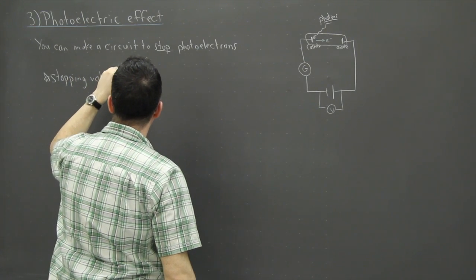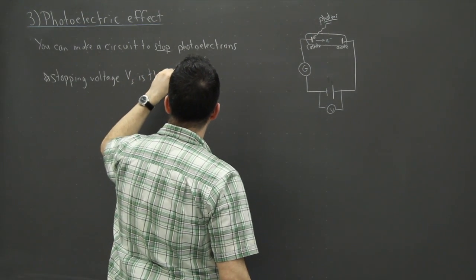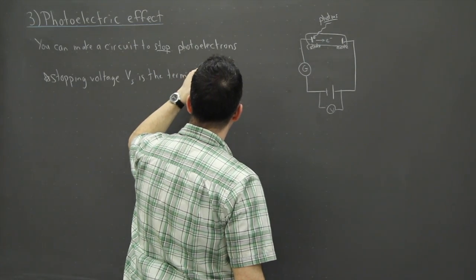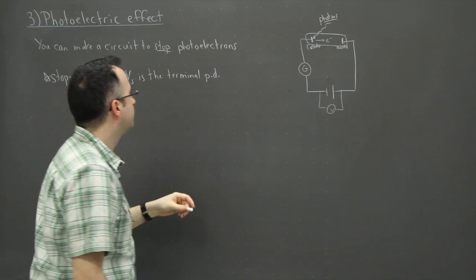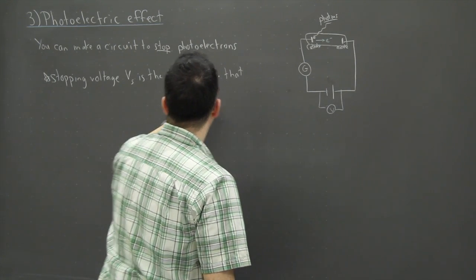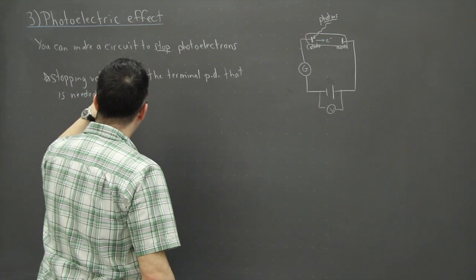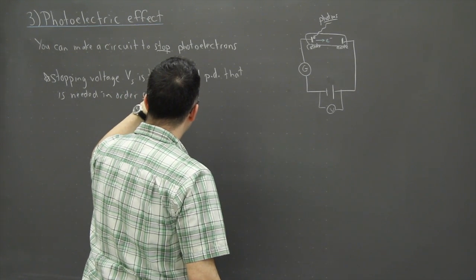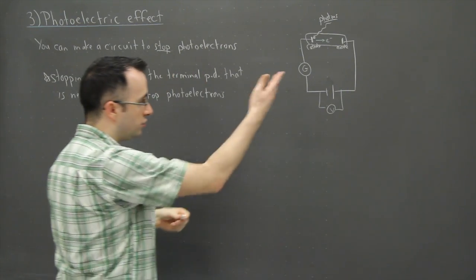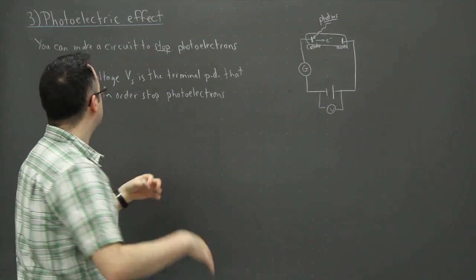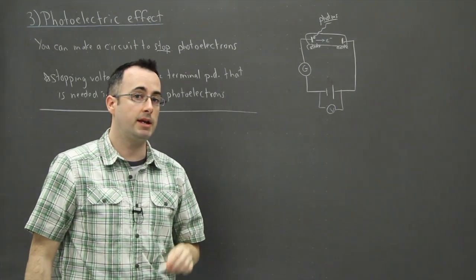Okay, so this right here we're going to call this the stopping voltage and we're going to call it V_S for voltage stopping. And that is the terminal potential difference, we often say PD for short in physics. Remember that means a voltage but it's potential difference that is needed in order to stop the photoelectron.